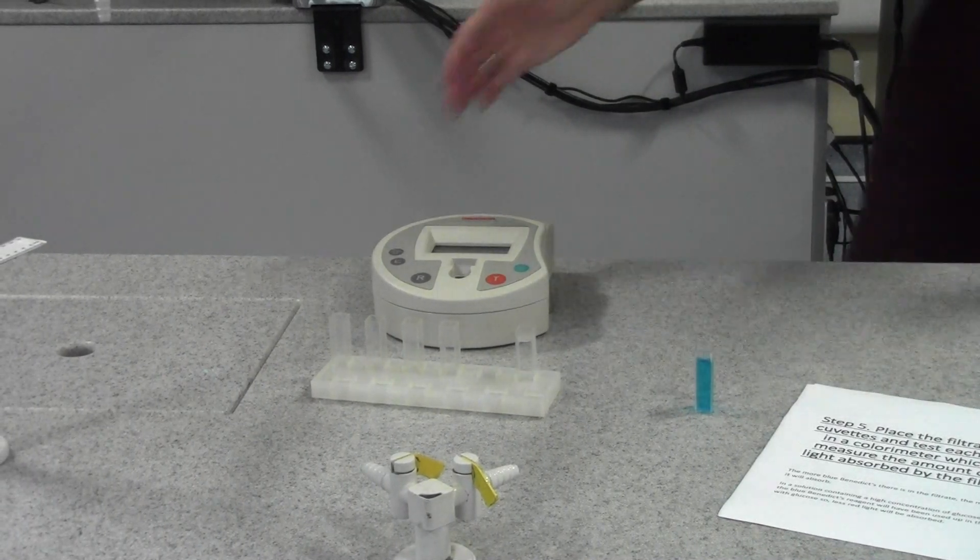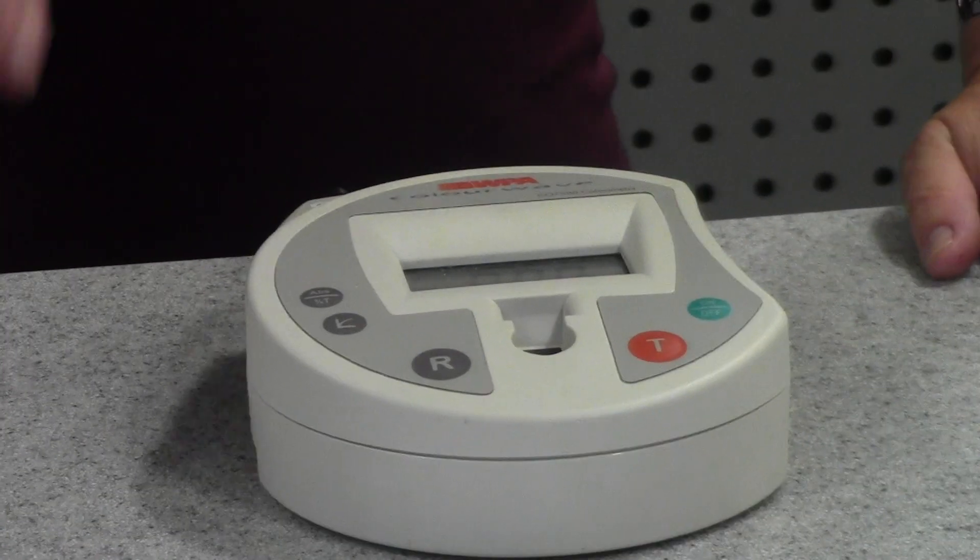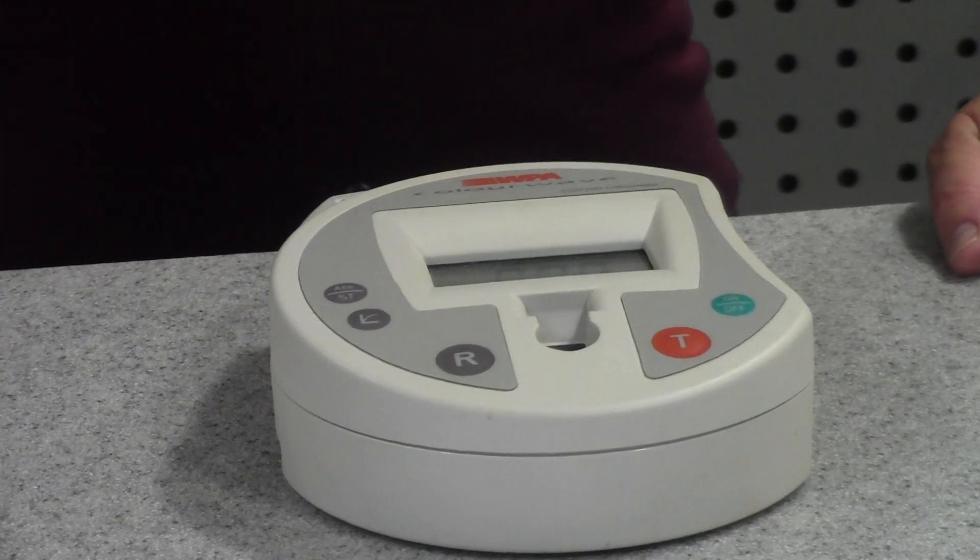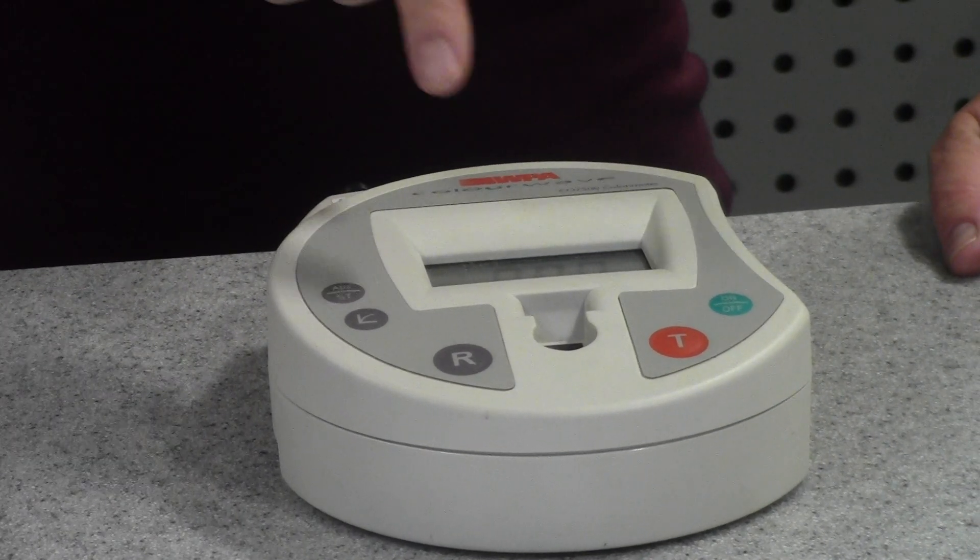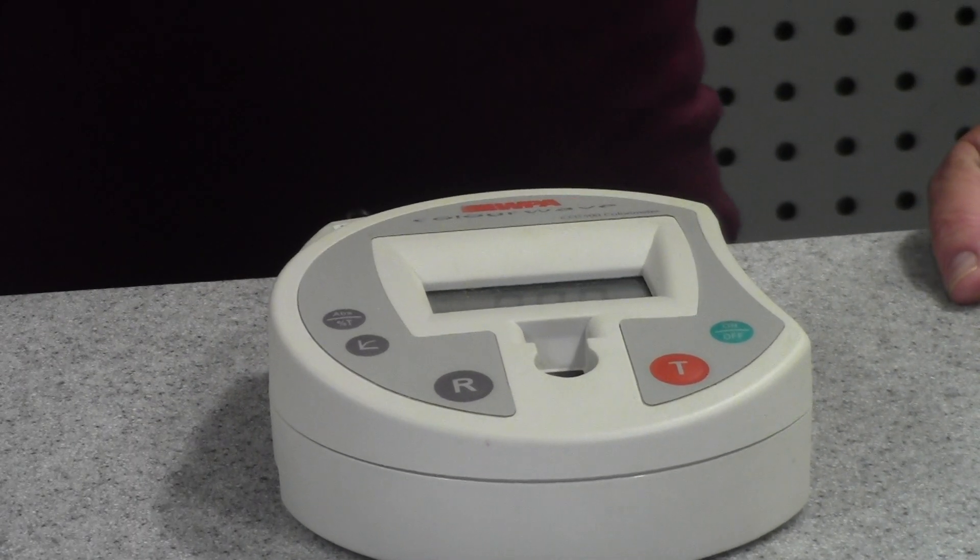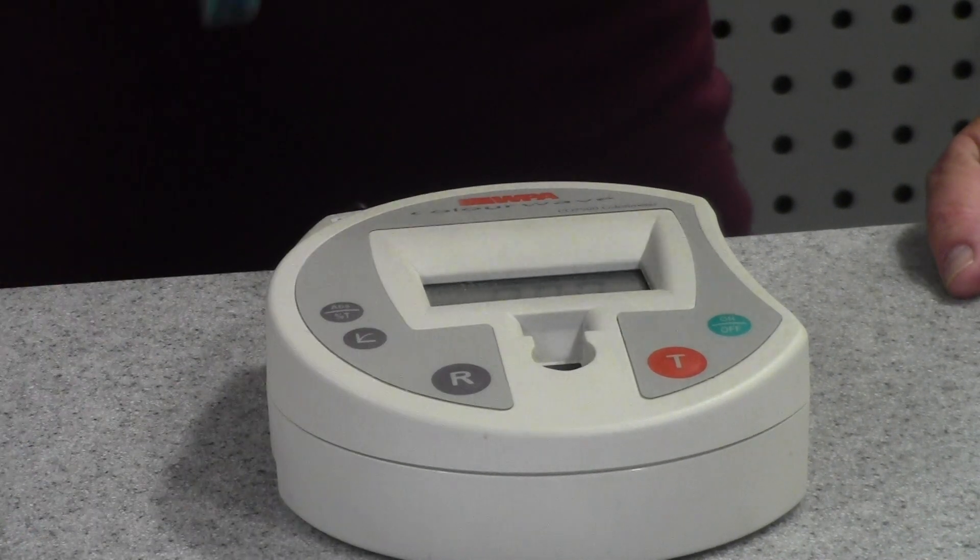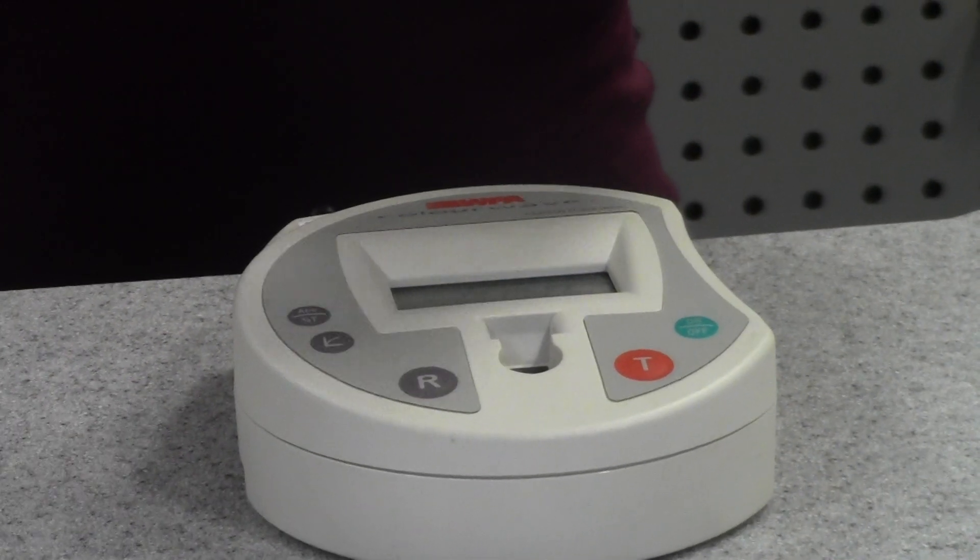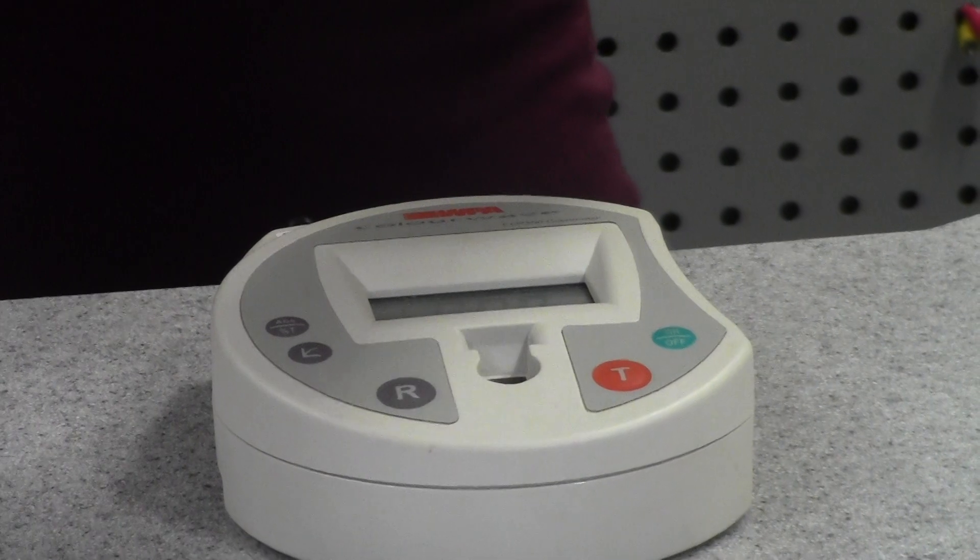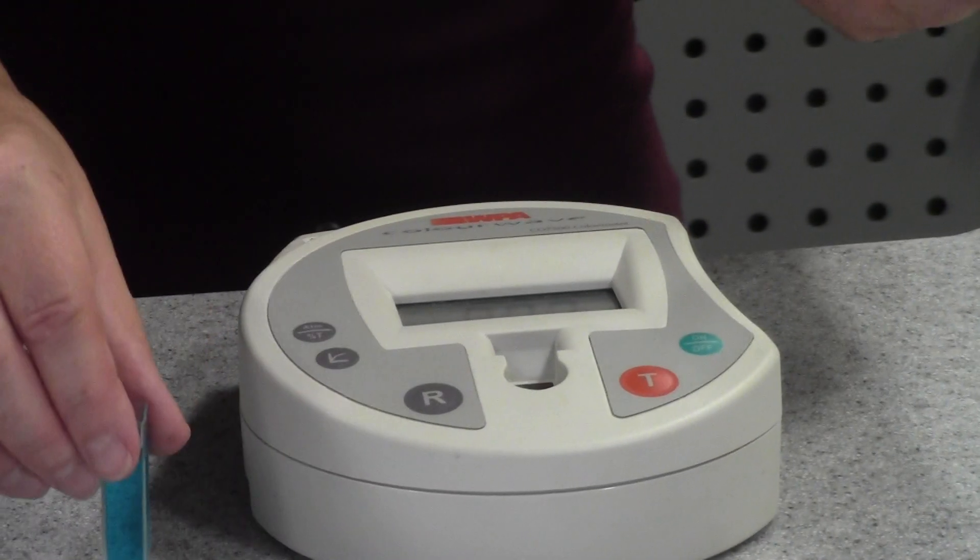This is a colorimeter, and the colorimeter measures the intensity of color in solutions. Now this one, I've set it with a red filter, so this is going to measure—it's going to shine a red light through the samples I place in there, and it's going to work out how much of that red has been absorbed. Now because this has got a lot of blue in it, it should absorb a lot of red light.